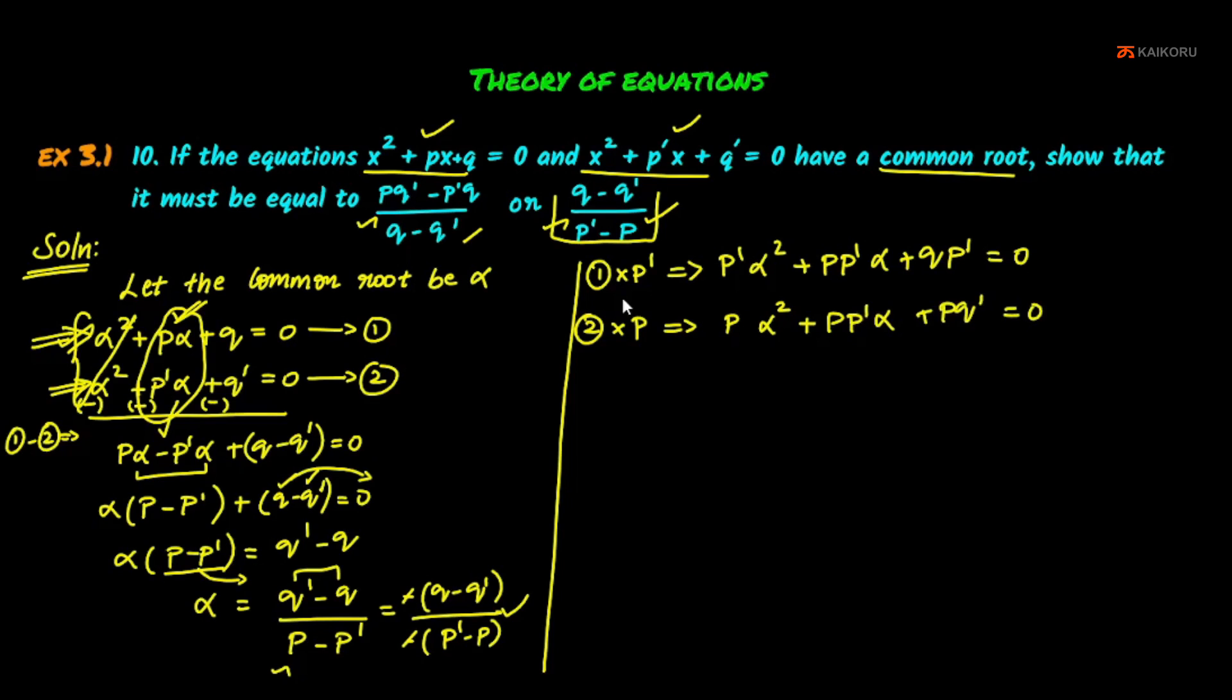Now subtract these equations. Third equation minus fourth equation, and multiply by -1 to change the symbols. We get p'α² - pα² - p'pα + pp'α - p'q + pq' = 0.